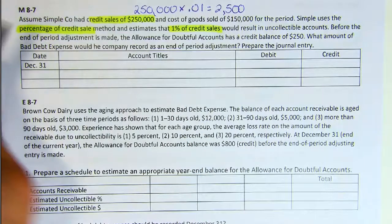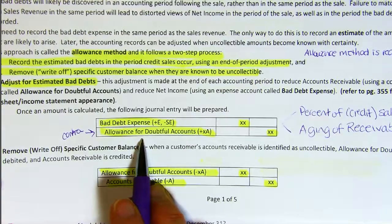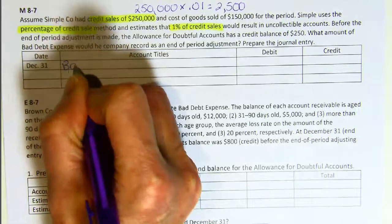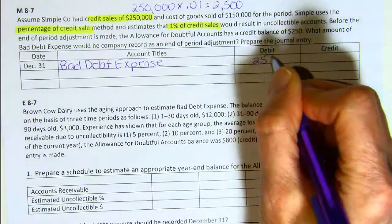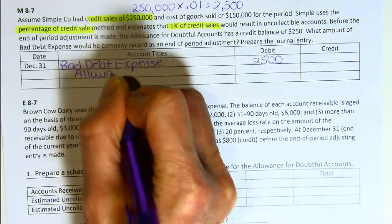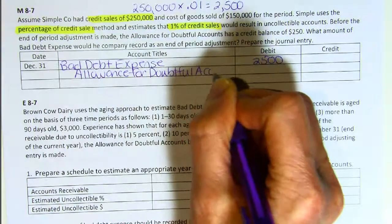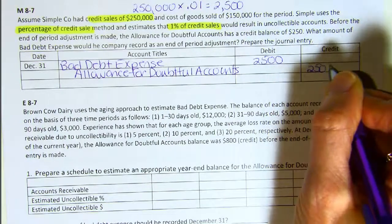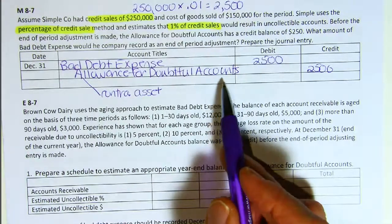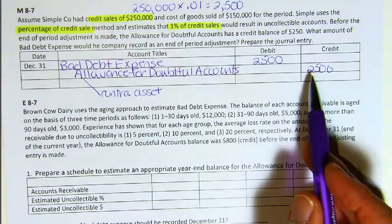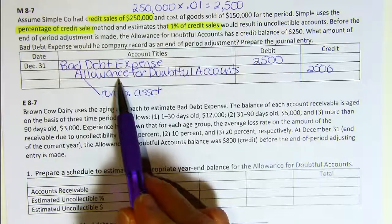This is the journal entry from page 1 of our notes: a debit to bad debt expense and a credit to the allowance for doubtful accounts. Remember that this allowance account is a contra asset account, and on the balance sheet we will use this account to subtract from accounts receivable what we think we won't collect. This is an estimate, so instead of crediting accounts receivable directly, we use this account to subtract for us.